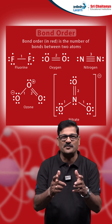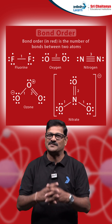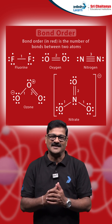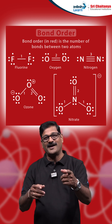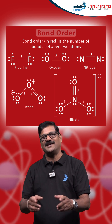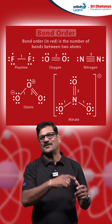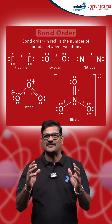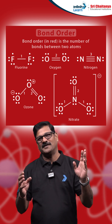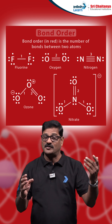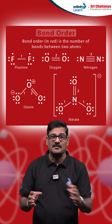Hi students, the most important point in chemical bonding is bond order. From the molecular orbital theory, bond order can be calculated using the formula: bond order is equal to the number of electrons in the bonding molecular orbital minus the number of electrons in the anti-bonding molecular orbital, divided by 2.